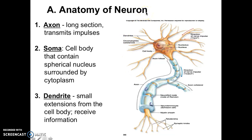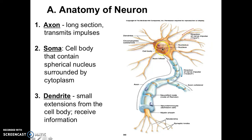So when talking about the pathway, it would actually come in this way. You have your dendrites — these are small extensions of the cell body that receive information. This is your soma, where you'll find your nucleus. And you have your axon, which is the long section that transmits the action potential.